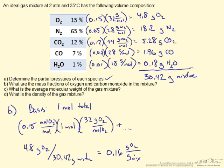The mass fraction of carbon monoxide, XCO, equals 1.96 grams CO divided by 30.42 grams mixture. This results in a mass fraction of carbon monoxide of 0.06 grams carbon monoxide per gram mixture. So that answers our question for part B.